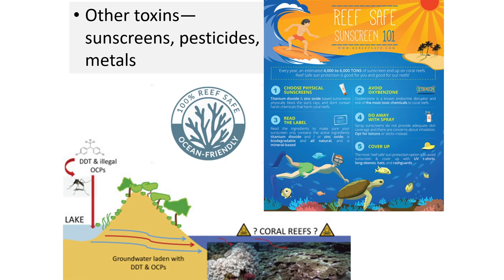Other toxins being put into coral reefs and marine aquatic ecosystems include sunscreens, pesticides, and metals. In a lake, for instance, you might have illegal OCPs and DDT entering through groundwater, which will harm coral reefs. You can educate yourself on what kind of sunscreen you're using. You want to use physical sunscreens — make sure to read the label and read the ingredients. Make sure it only contains titanium dioxide and/or zinc oxide because it's biodegradable.